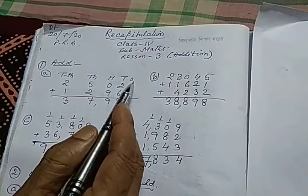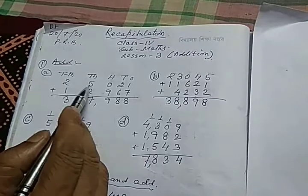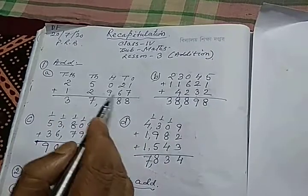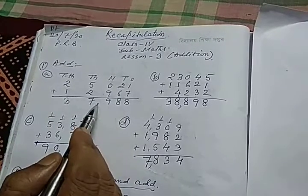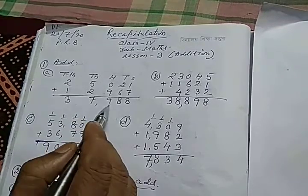The first number is 25,021 and the second number is 12,967. After adding these two numbers, we have the result 37,988.